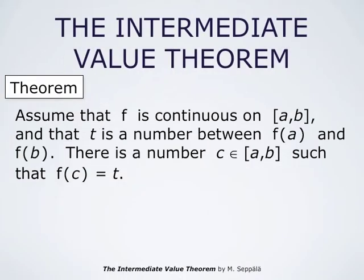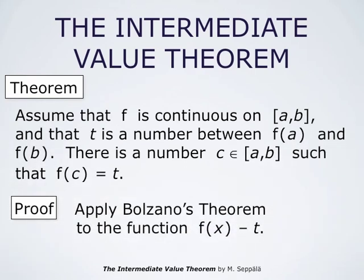The Intermediate Value Theorem is now an easy consequence of Bolzano's theorem. It states that if f is a continuous function on the interval from a to b, and t is a number between f(a) and f(b), then there is a number c in the interval from a to b such that f(c) = t. To prove this, we apply Bolzano's theorem to the function f(x) minus t. Its signs at a and at b are different, so we may apply Bolzano's theorem, which says that at some point c in the interval, f(x) minus t takes the value zero, and at that point f(c) = t. Therefore, the proof is complete. This was an easy application of Bolzano's theorem.